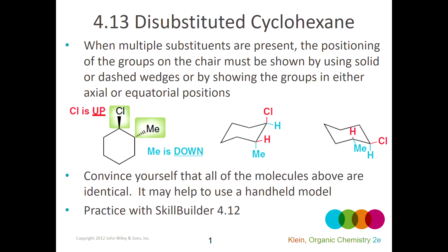We'll jump into where we left off on Tuesday. We're talking about cyclohexane and how the chair is the more stable version. Any chair has a carbon at the foot of the chair — the feet — and another carbon that's the head of the chair, and then these carbons here are all basically in the same plane as one another. That's one way to think about a chair.